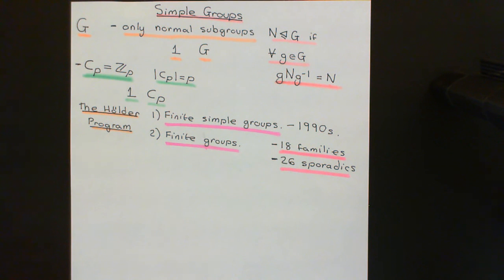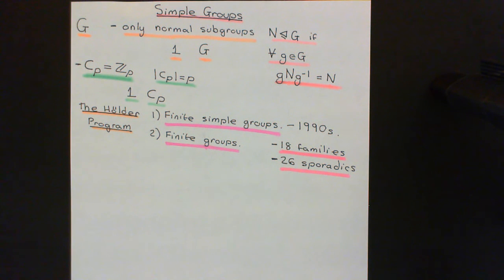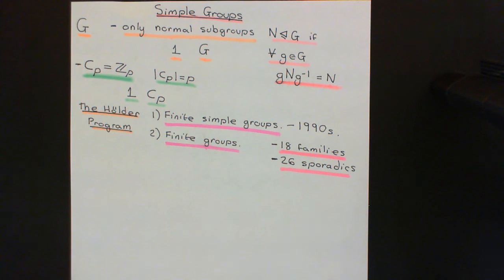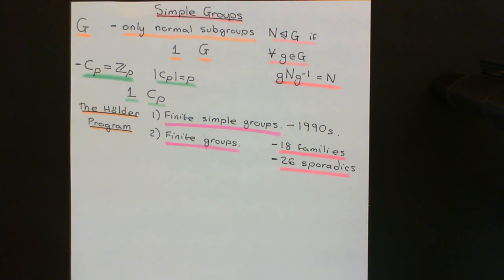So that is the result of part one of the Hölder Program, and it is done — we have characterized all finite simple groups. Part two remains an open problem: characterizing all finite groups. We haven't yet characterized all of the different ways that you can put the building blocks together to build a finite group. Although we now know all of the building blocks, we don't yet know all of the different ways of piecing them together to get finite groups, so part two is still being worked on. With that we will end this introductory video on simple groups.